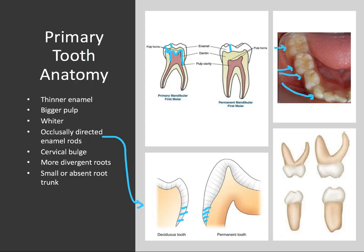Also note the presence of a cervical bulge — this is a prominent cervical ridge, especially at the primary first molar. The part that bulges out at the mesiofacial component is the cervical ridge, what I like to call the cervical bulge.